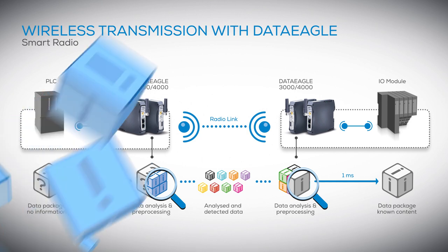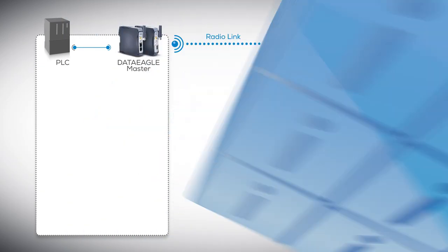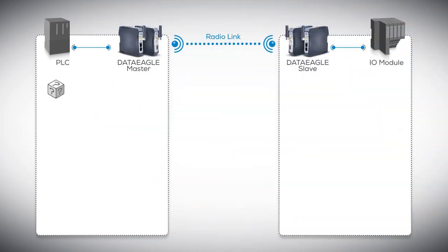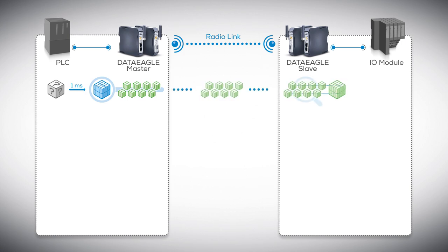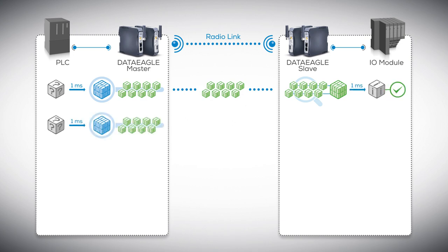And this is how it all works. A data packet comes from the control unit. The DataEagle master processes the data packet, which is then sent to the DataEagle slave. There, the packet is also processed and passed to the I/O module or PLC as desired. Now it gets exciting — another data packet arrives and there is a timeout, for example due to a short-term interference.